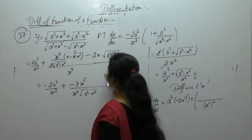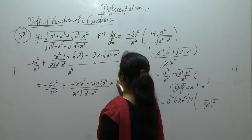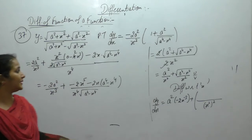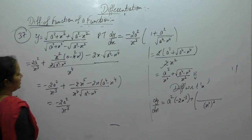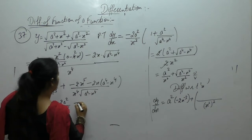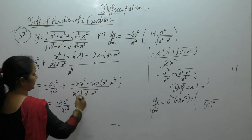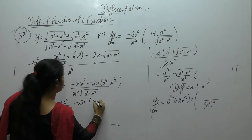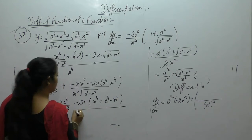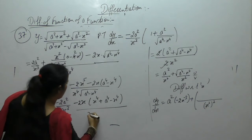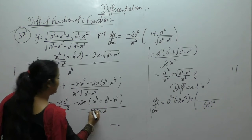a⁴ into this term, minus 2x. The square root will get cancelled with a⁴ minus x⁴. In the next step we get minus 2a² upon x³, minus x⁴. Take x common from here: minus 2x, so x⁴ plus a⁴ minus x⁴, upon x⁴(a⁴ minus x⁴). So x³ is left here.